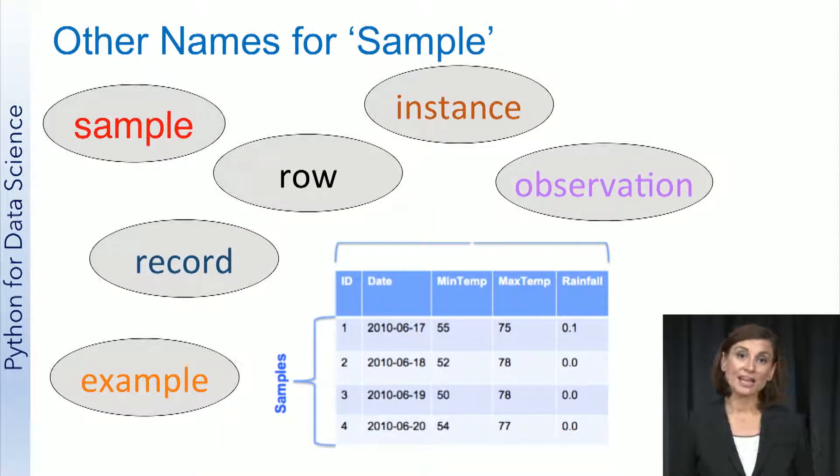In fact, there are many names for samples and variables, some of which we've already used in some of our previous weeks. Some other terms for sample that you might hear in the machine learning context are record, example, row, instance, and observation, among many others. It is good to know that all of these terms mean the same thing in the machine learning context. That is, they all refer to a specific example of an entity in your data set.